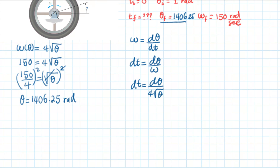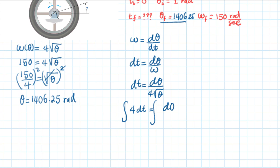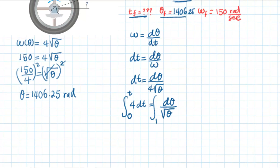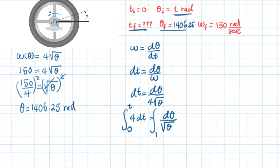Since omega equals 4 times the square root of theta, substituting gives delta t equals delta theta over 4 times the square root of theta, or equivalently 4 times delta t equals delta theta over the square root of theta. We take the integration of both sides. The time integrates from 0 to t final, and theta integrates from its initial value of 1 radian to the final value of 1406.25 radians.